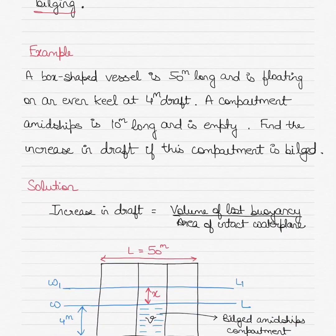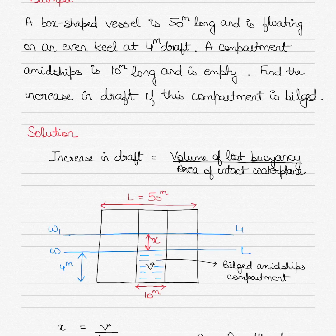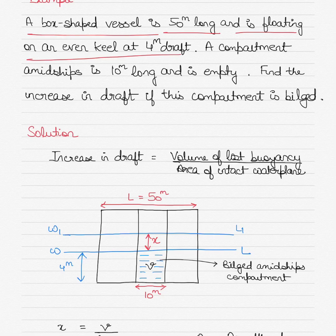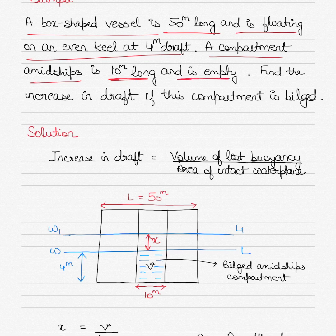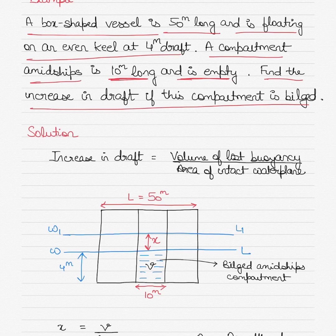Now let's work through a numerical example. A box shaped vessel is 50 meters long, floating on an even keel at 4 meters draft before bilging. The midship compartment is 10 meters long and is currently empty. We need to find the increase in draft if this compartment gets bilged. The formula is: increase in draft X equals volume of lost buoyancy divided by area of the intact water plane.